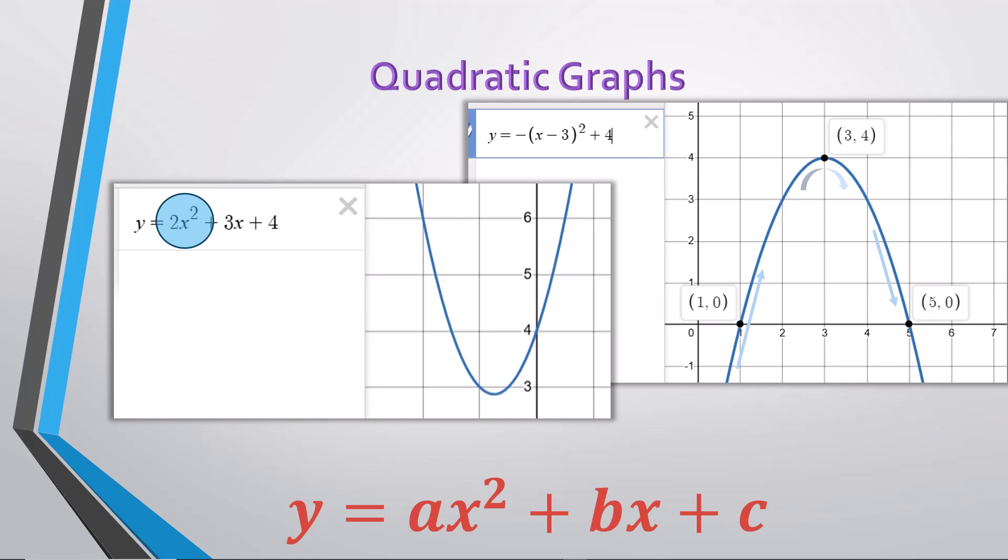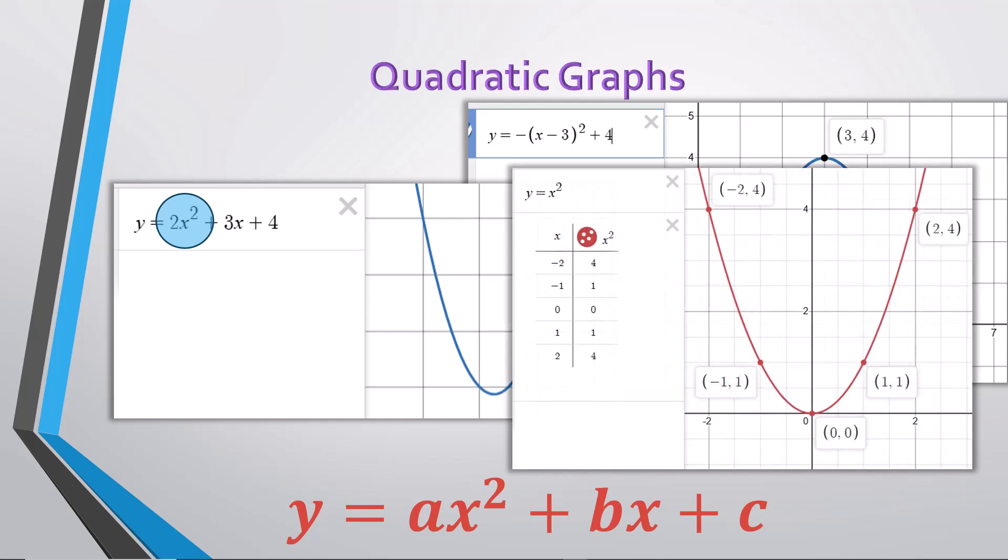The standard form for a quadratic is y equals ax squared plus bx plus c, and the most basic of these is y equals x squared plus 0x plus 0, or y equals x squared, as you can see in this graph, which opens up and sits right on the origin. This most basic parabola is referred to as the parent function for quadratics. Notice the y values in the table are the squares of each corresponding x value.